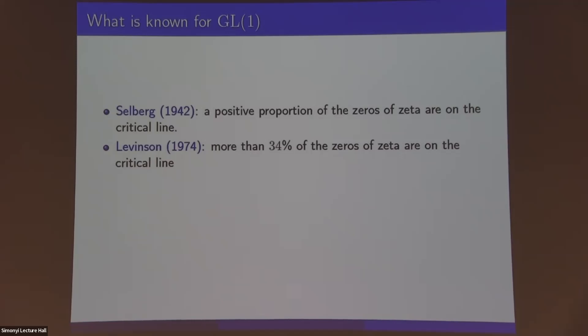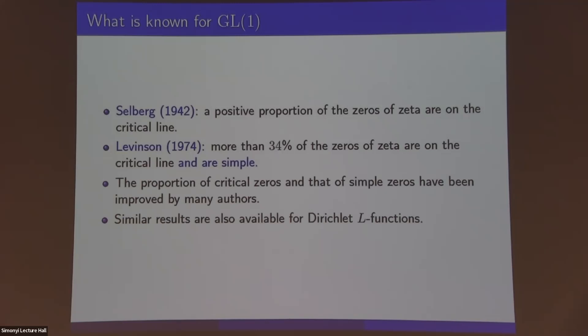But more interestingly, for the purposes of this talk, as was afterwards noticed by Heath-Brown from Levinson, his method actually gives that these zeros are all simple. He actually produces simple zeros on the critical line. So in particular, a positive proportion of the zeros are also simple, and that gives an approximation of the simplicity hypothesis. There's an arms race here for increasing these proportions. The records for both of them are around 41%. It's also worth mentioning that similar results are available for Dirichlet L-functions as well. So in some sense, at least qualitatively, this takes care of the case of L-functions of degree one.